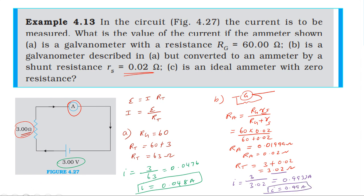For the third case with an ideal ammeter having zero resistance, the total resistance is 3 plus 0, which equals 3 ohm. The current equals the EMF of 3 volts divided by 3 ohm, which equals 1 ampere.